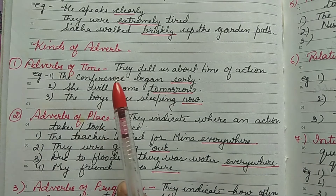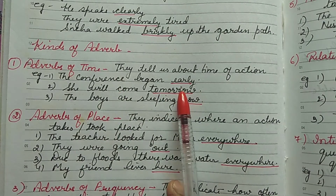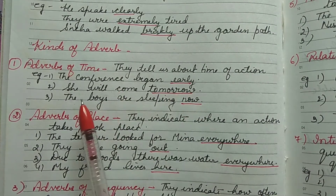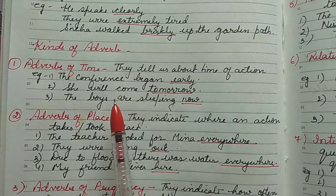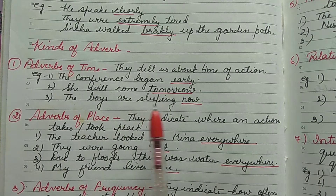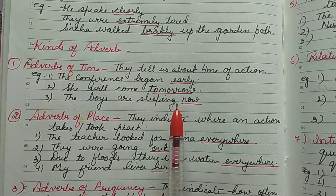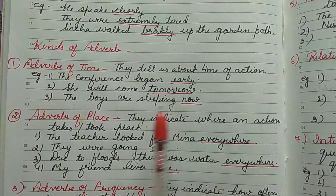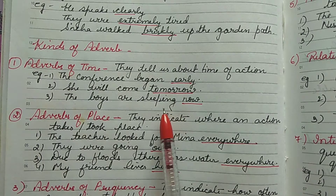Examples of adverb of time: 'The conference began early' — 'early' depicts that this happened earlier. 'She will come tomorrow' — the timing is what comes next, that is tomorrow. 'The boys are sleeping now' — the action is sleeping and it is happening now. So early, tomorrow, and now are adverbs of time.